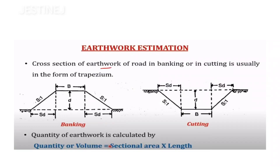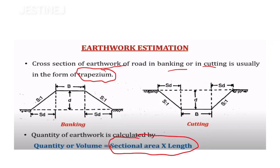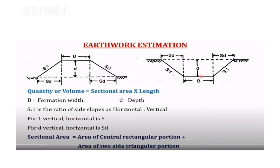The earthwork of a road in banking or cutting is usually in the form of a trapezium. We have to find the area of that cross-sectional trapezium and then multiply by the length of that road section — sectional area multiplied by length gives volume in meter cubed. Cutting applies to roads, canals, etc., while banking applies to construction of tunnels and trenches.